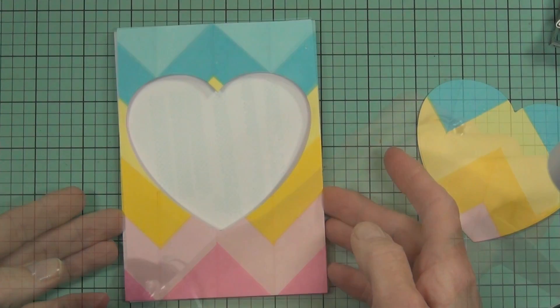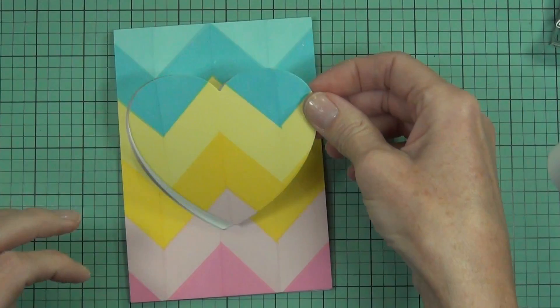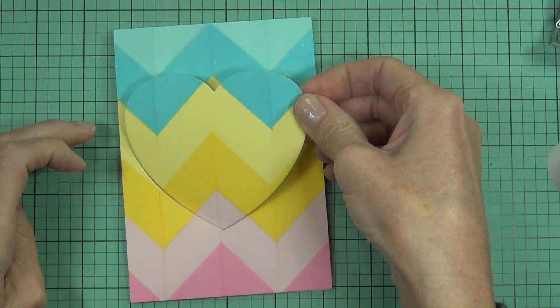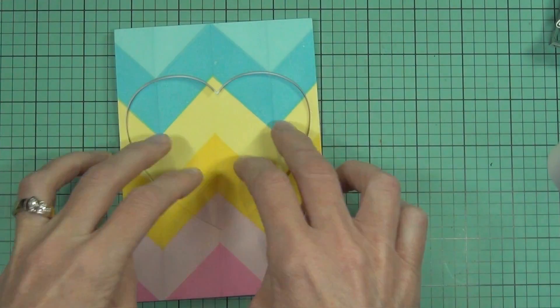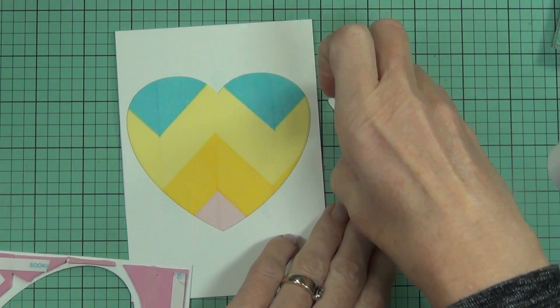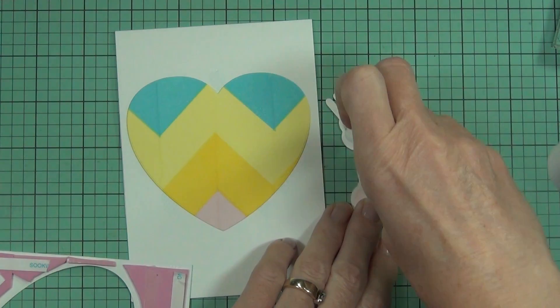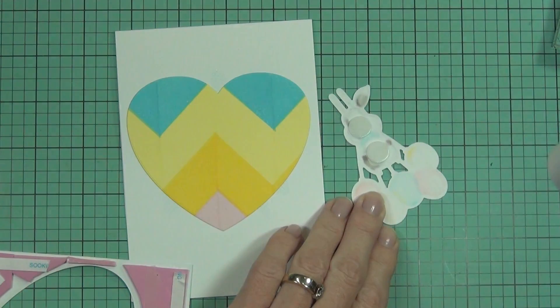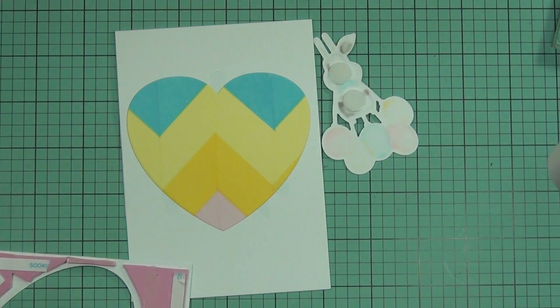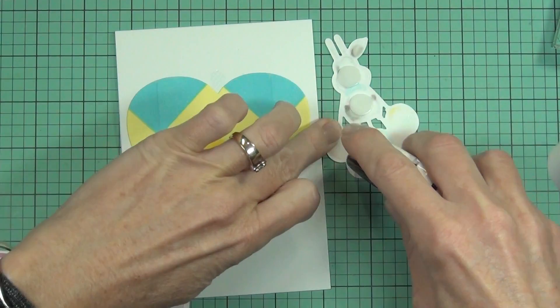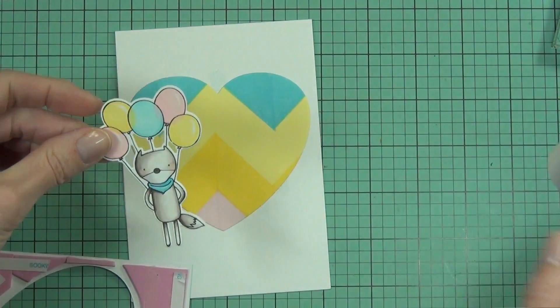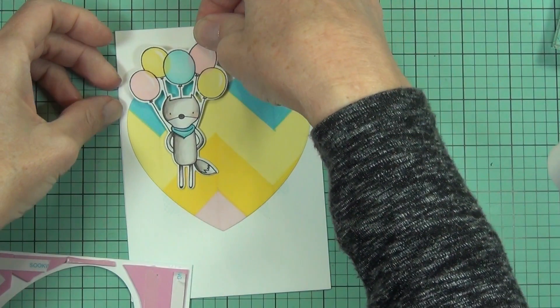I'm just working out where to place the heart. I've cut my chevron panel down to the same size as the card front and adhered the heart directly to the card base.